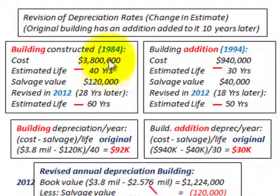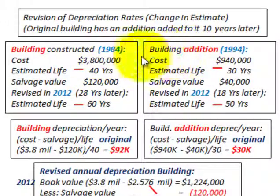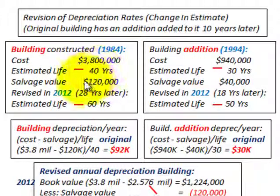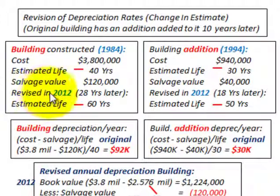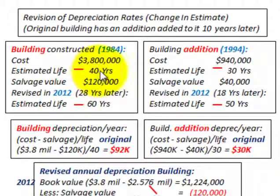What we have to do is calculate our original depreciation rate for both our building and our addition. For the building, we had a cost of $3,800,000, an originally estimated life of 40 years, and a salvage value of $120,000. The change in estimate comes in 2012, or 28 years later, when we revise the estimated life from 40 years up to a new estimated life of 60 years.